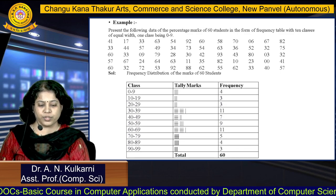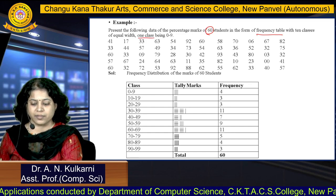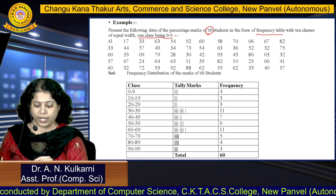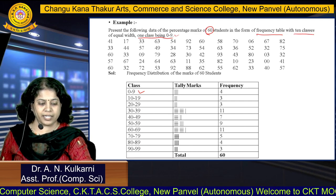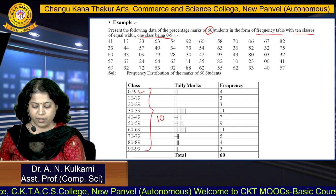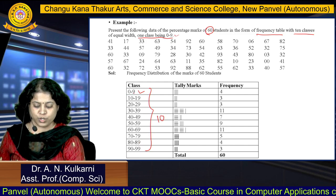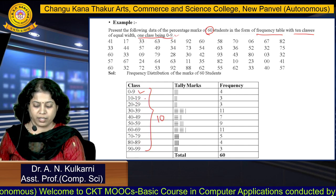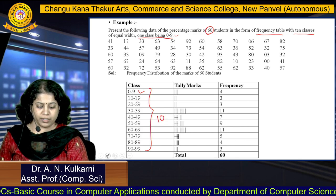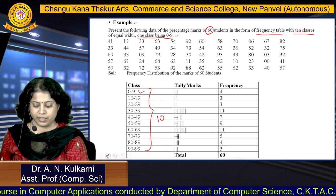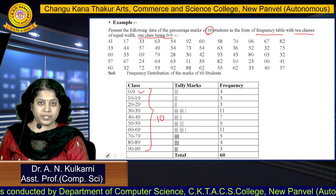Now see the next example. Data of 60 students is given and we have to construct a frequency table, but here the class interval is already given, starting from 0 to 9, of equal width 10. So there are 10 classes: 0–9, 10–19, 20–29, and so on up to 90–99, since the data items go up to that range. The last class interval is 90 to 99.